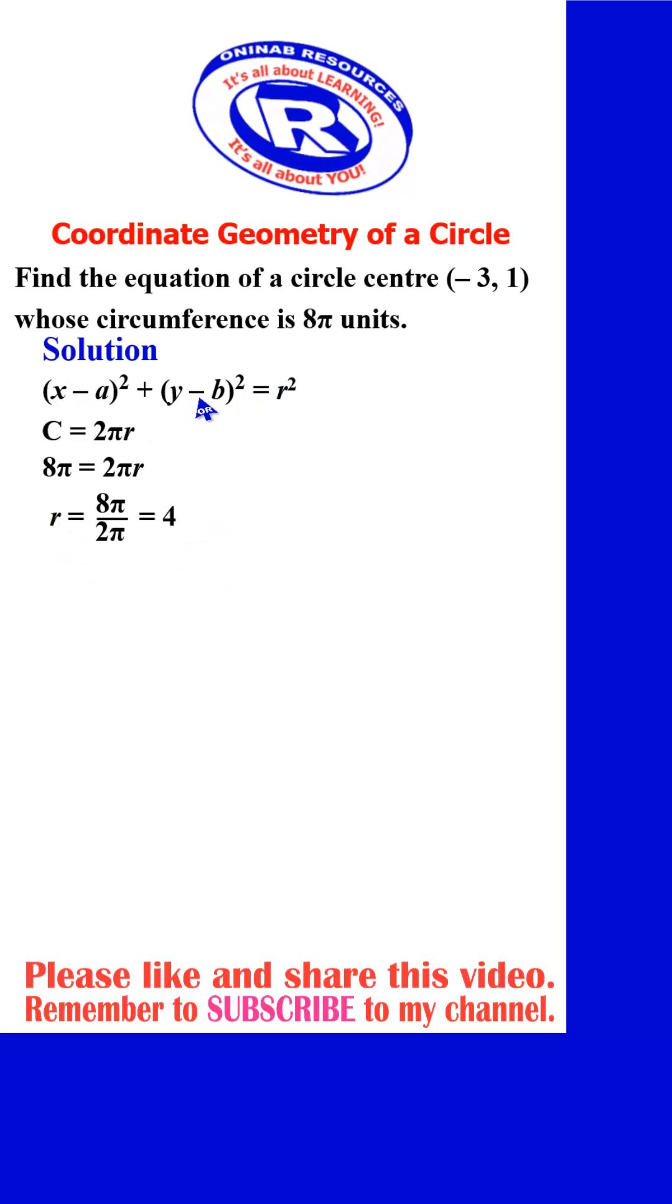We then substitute a, b, and r into this relation to get our equation. So we are going to have (x - (-3))² + (y - 1)² = 4². Then our a is -3, so negative a gives us positive 3, all raised to the power 2, then plus (y - b), our b is 1, then all squared is equal to 4 squared.